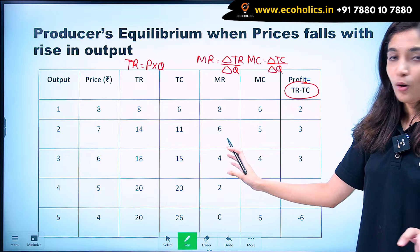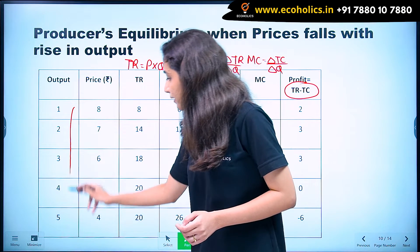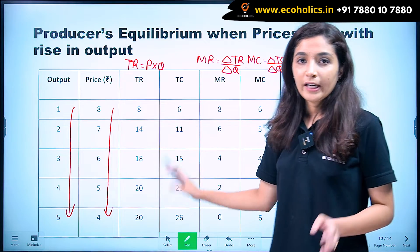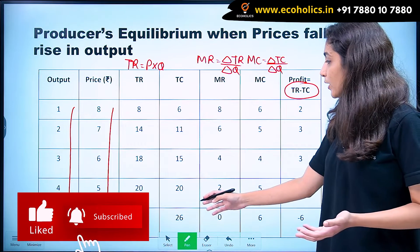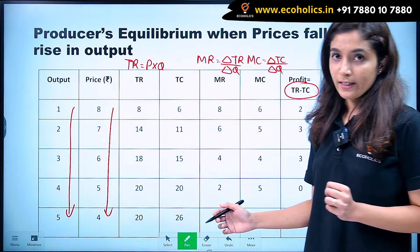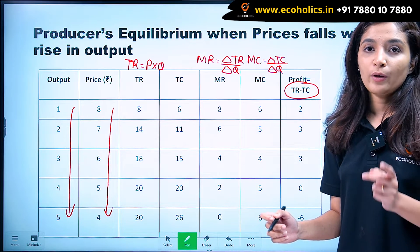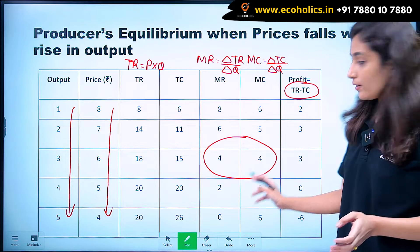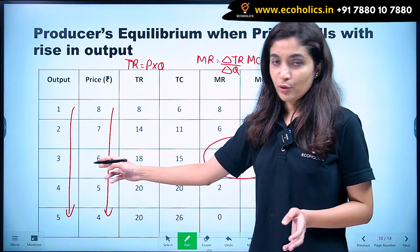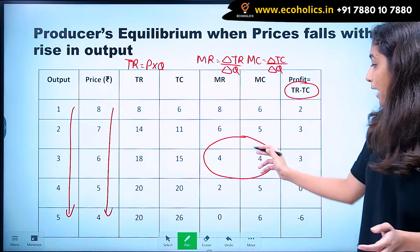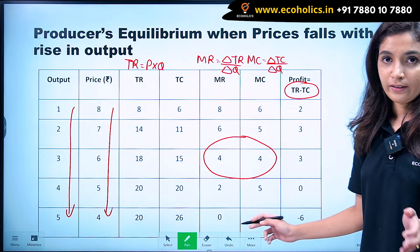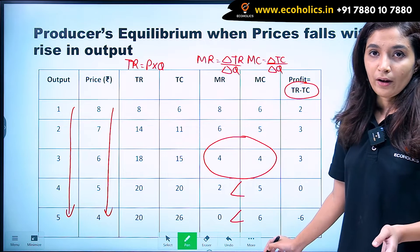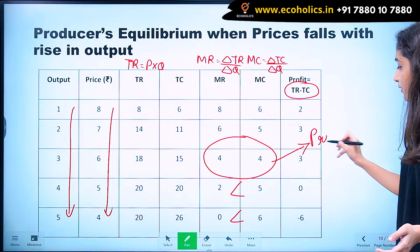Since it is an imperfect competition, when we go on increasing our output, our prices fall. Now, when is a producer at equilibrium? He will be at equilibrium when both conditions are satisfied. First condition: marginal cost should be equal to marginal revenue — in this case, MC equals MR when he produces three units of output. Second condition: after MC equals MR, our MC should be greater than MR. After this point, MC is greater than MR, and therefore the producer is at equilibrium.